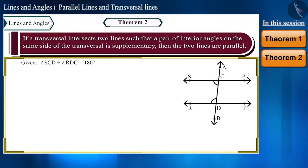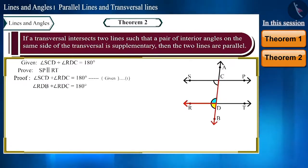With the help of this we have to prove that lines SP and RT are parallel lines. Now let's look at its proof. We have been given this. Look at the figure. Angle RDB and angle RDC are forming a linear pair.